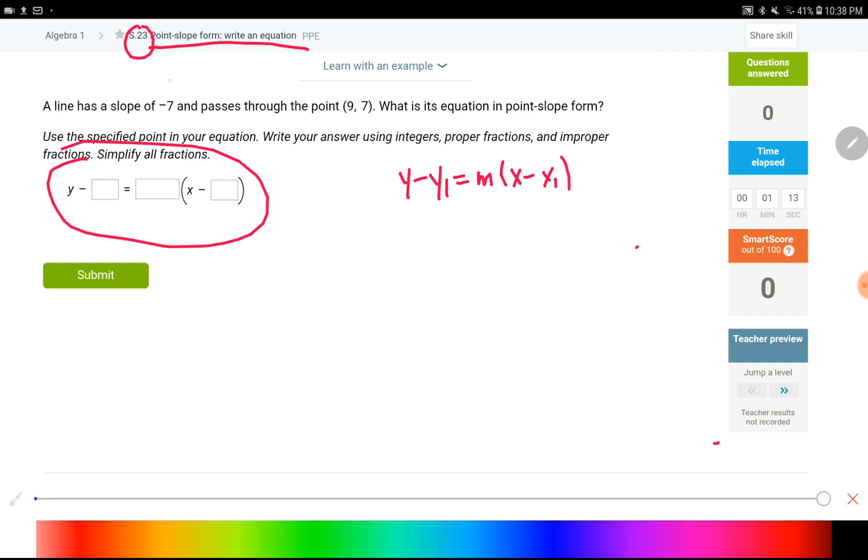So if we look up what is given, slope is given as negative 7, so negative 7 is my m value, 9 is my x1, and 7 is the y1 value.